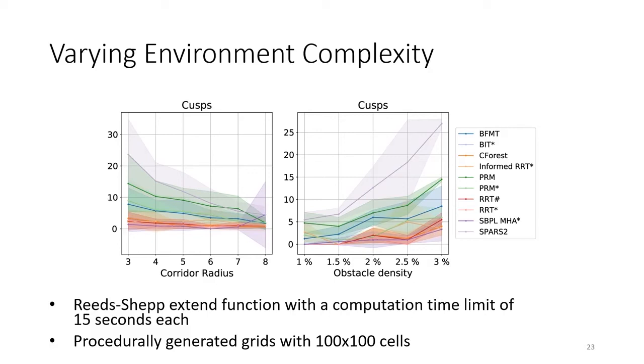We can see that the number of cusps significantly decreases for almost all motion planning algorithms as the corridor sizes become bigger. On the other hand, the number of cusps goes up for almost all motion planning algorithms as the percentage of blocked cells increases.